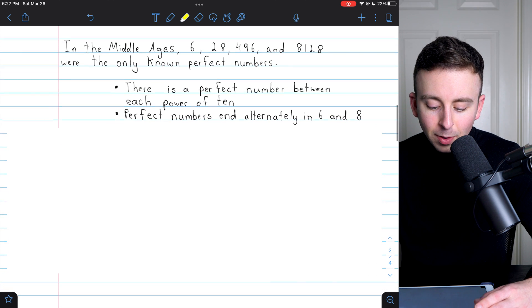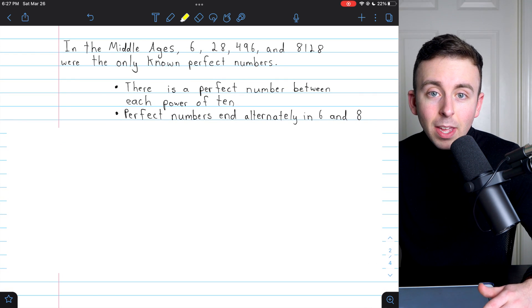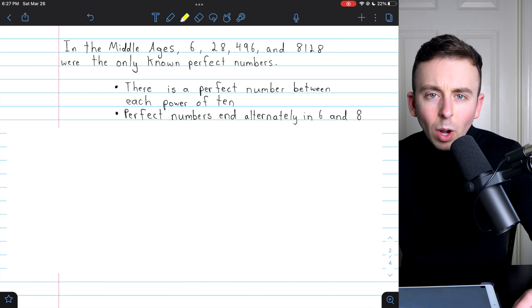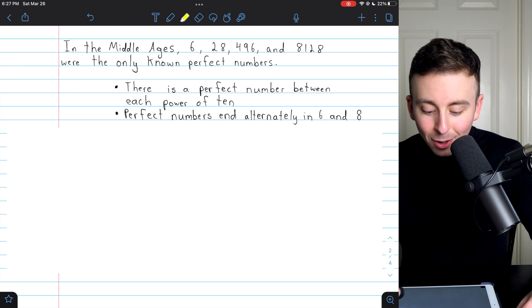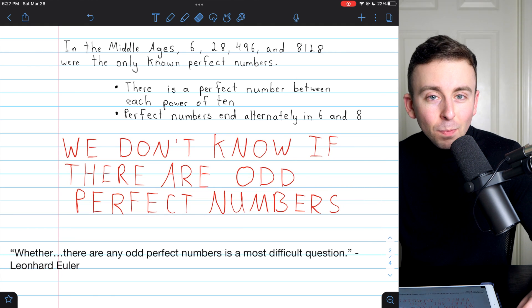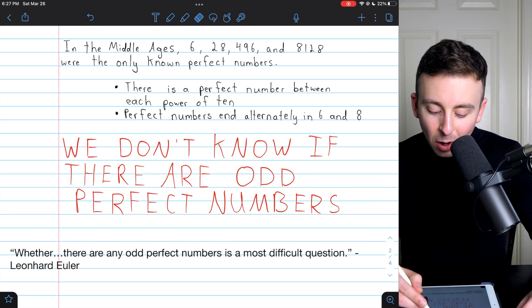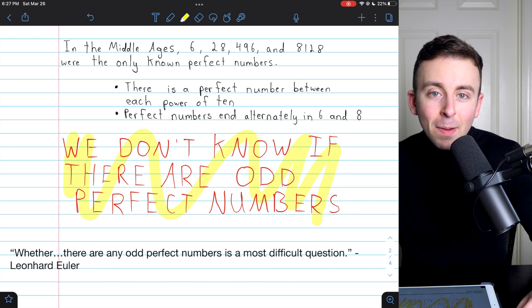Coming back down to these pair of conjectures that both ended up being false, there was another conjecture you might wonder about, which is, are all the perfect numbers even? Because all the ones we've seen so far are. Not just the ones I've shown you. In fact, every perfect number known to man currently is even. So, is every perfect number even? We actually don't know, which is pretty darn surprising.